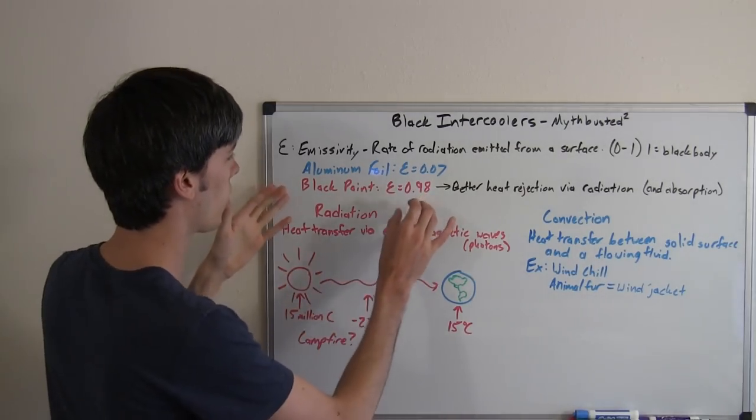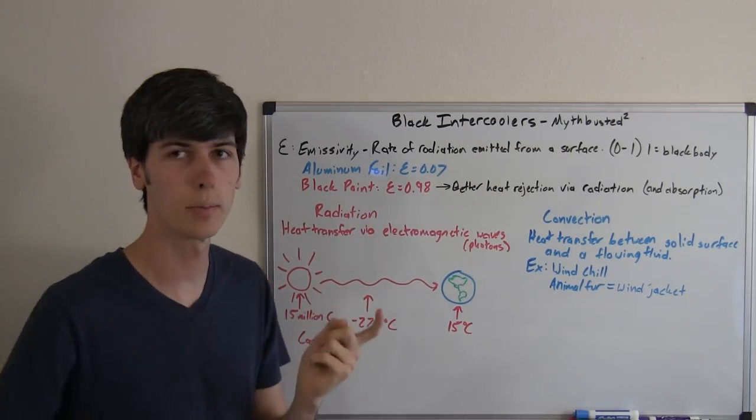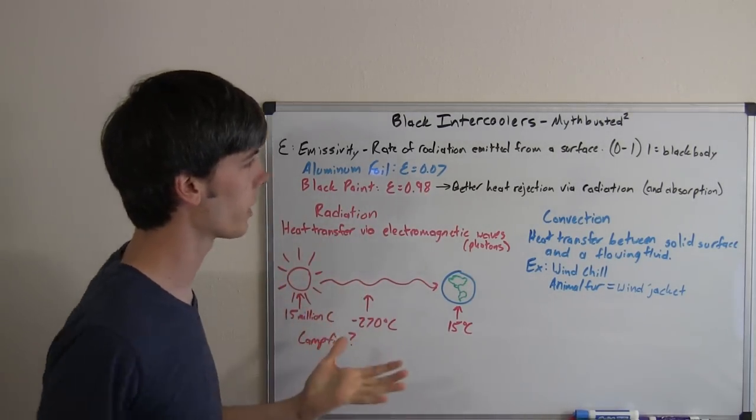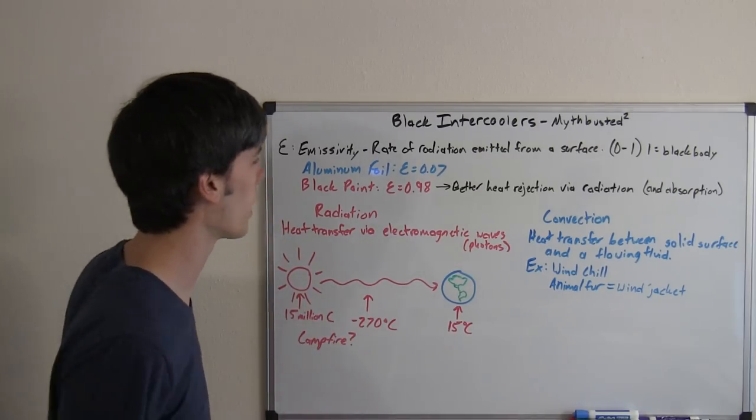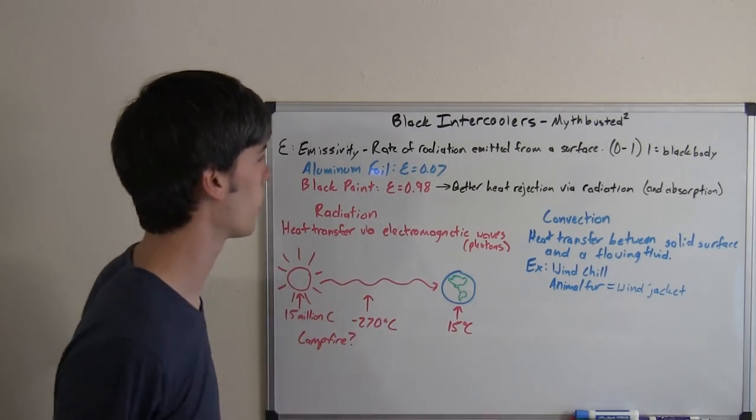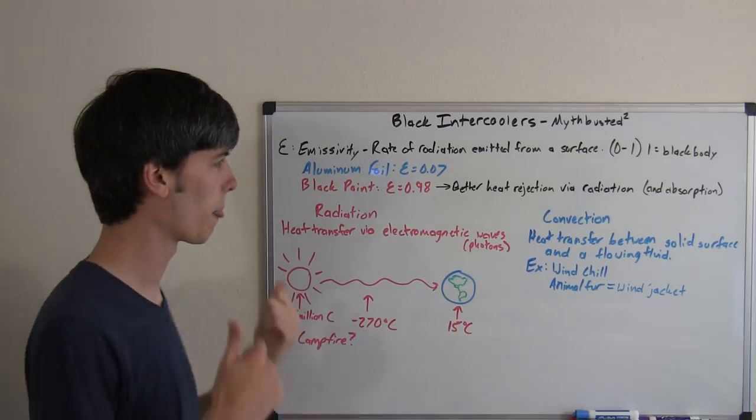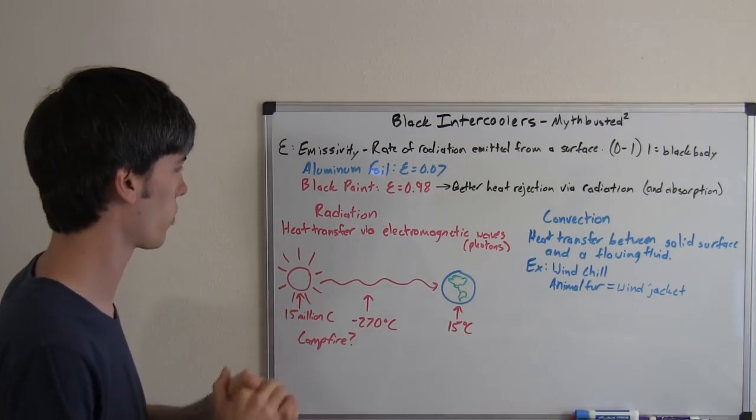So one might think logically that if black paint has a higher emissivity, it'll give out more heat via radiation. Therefore, I should paint everything black because everything will dispense out more heat and everything will be cooler. Great. The logic sounds fine so far.